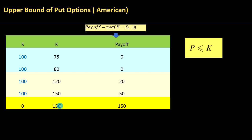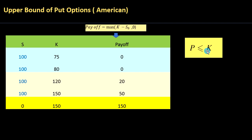The maximum value a put option could take is the strike price — a put option can never be worth more than its strike price. For American put options, if a put option is priced beyond the strike price, there are arbitrage opportunities — in other words, you can make risk-free gains.